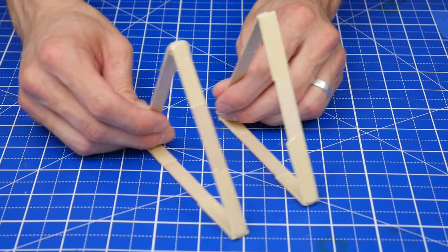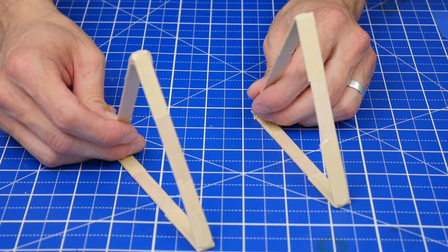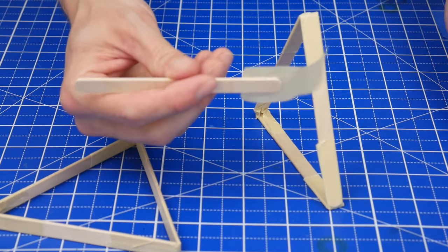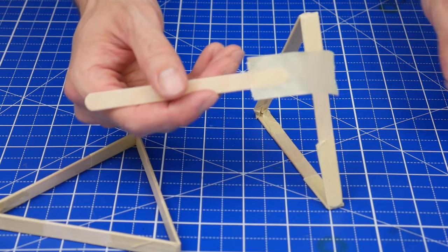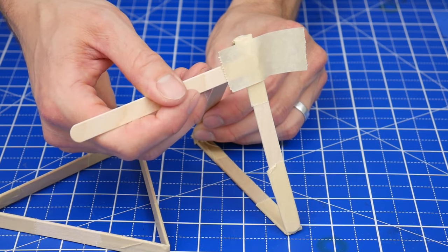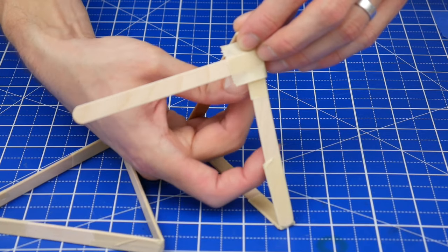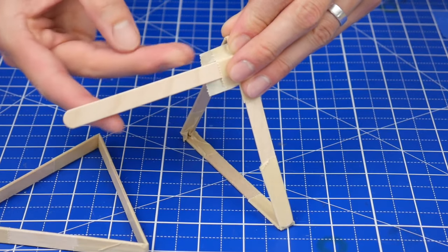Next we're going to connect these together with three more craft sticks. Use a similar taping technique of putting the tape on the end of the stick so some of the sticky part is hanging off, line the stick up near the corner of the triangle, and wrap the tape around the triangle until the tape sticks to itself.